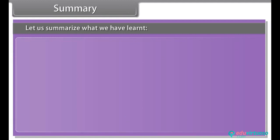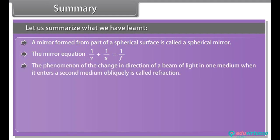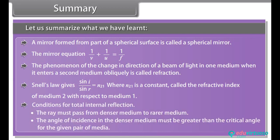Summary: A mirror formed from part of a spherical surface is called a spherical mirror. The mirror equation is 1/v + 1/u = 1/f. The phenomenon of change in direction of a beam of light when it enters a second medium obliquely is called refraction. Snell's law gives sin i / sin r = n21, where n21 is the refractive index of medium 2 with respect to medium 1. Conditions for total internal reflection: the ray must pass from a denser to a rarer medium, and the angle of incidence must be greater than the critical angle.